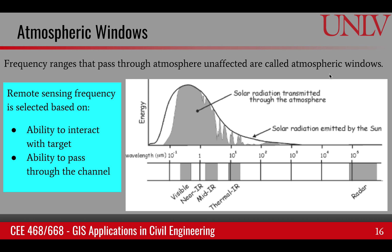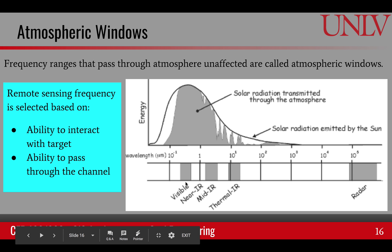How we choose these frequencies depends upon atmospheric windows — these are the frequency ranges that pass through the atmosphere unaffected. This dark line is the energy received at the top of the atmosphere, not attenuated by open space. But once it passes through the atmosphere, certain portions are either absorbed or scattered back into space. What remains — this gray portion — is what reaches the ground. The visible portion is not very much affected by the atmosphere, and that's why it's used for remote sensing.